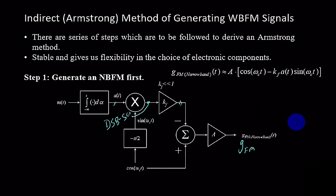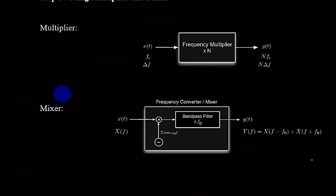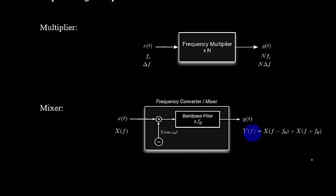For that conversion we have basically two blocks: the first one is a multiplier and the second one is a mixer. In the mixer, the input is multiplied with a local oscillator, and based on the frequency of the local oscillator, X(f) is shifted — X(f) is shifted to X(f − f₀) or X(f + f₀). We use a band pass filter to select the desired component, similar to what we have used in DSB-SC or AM.